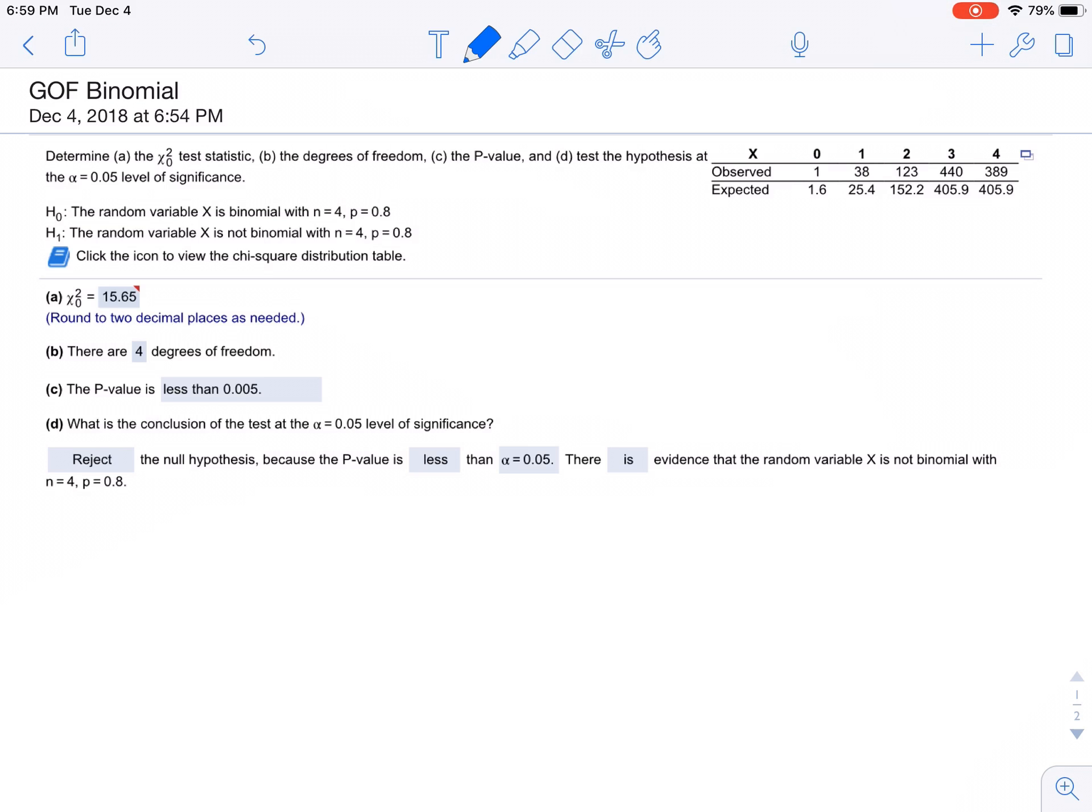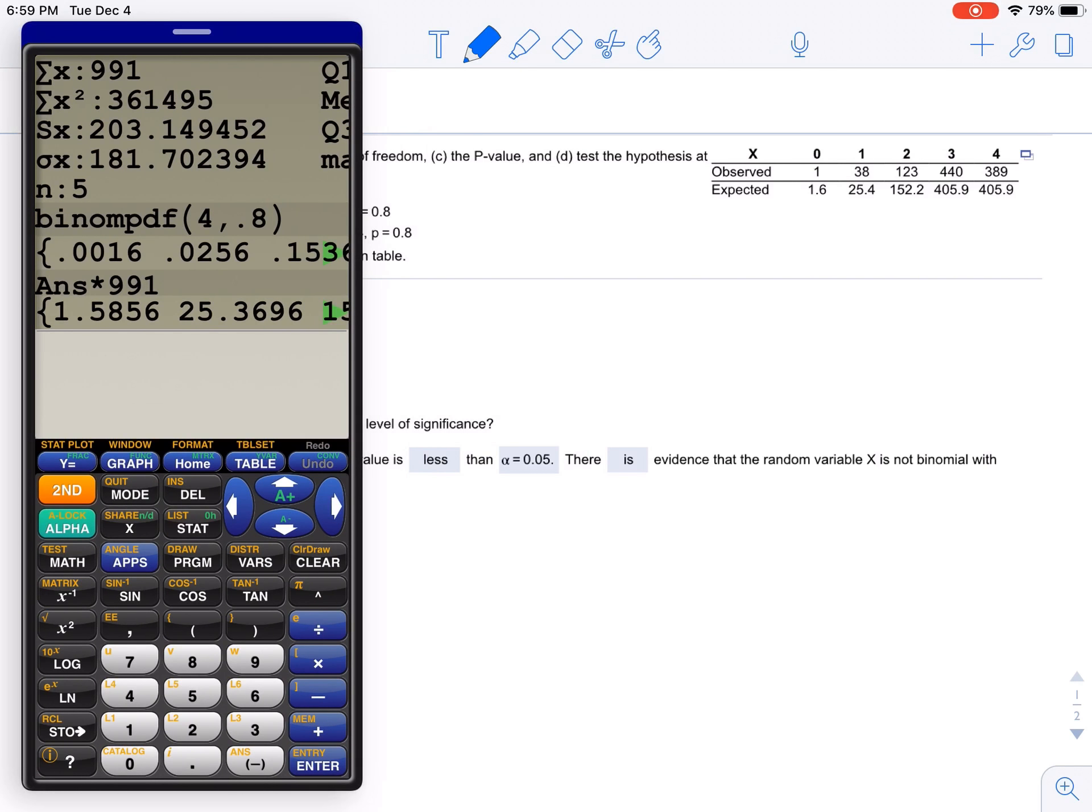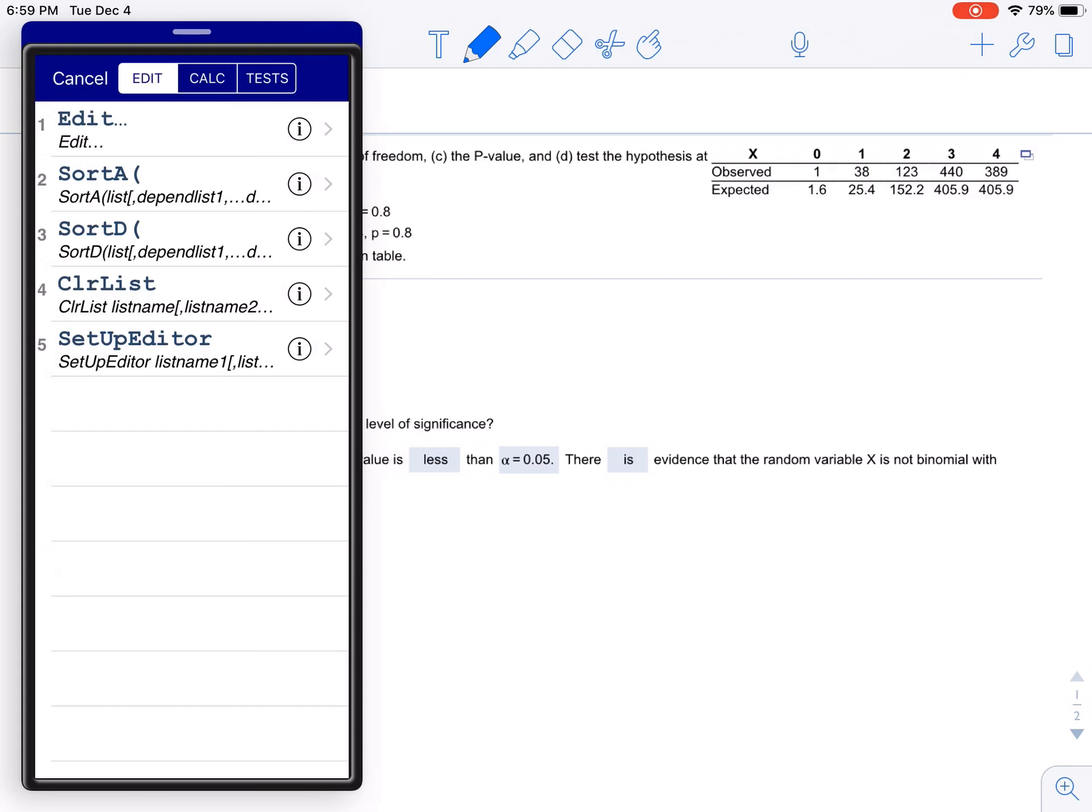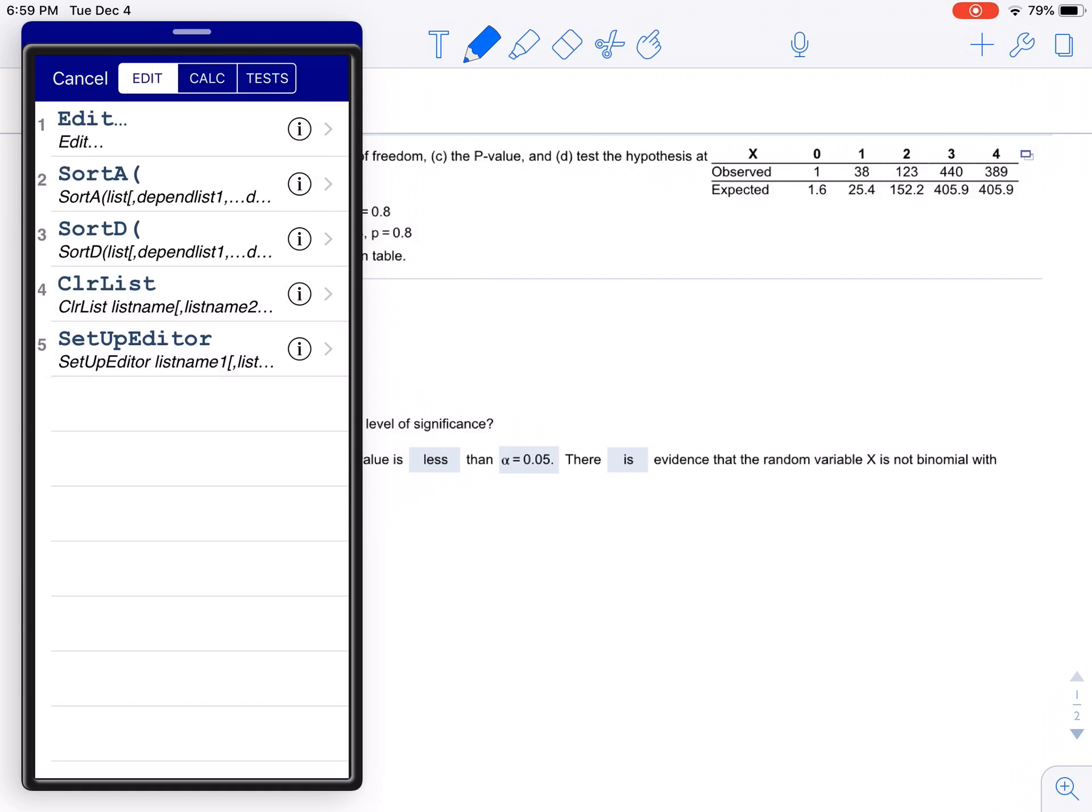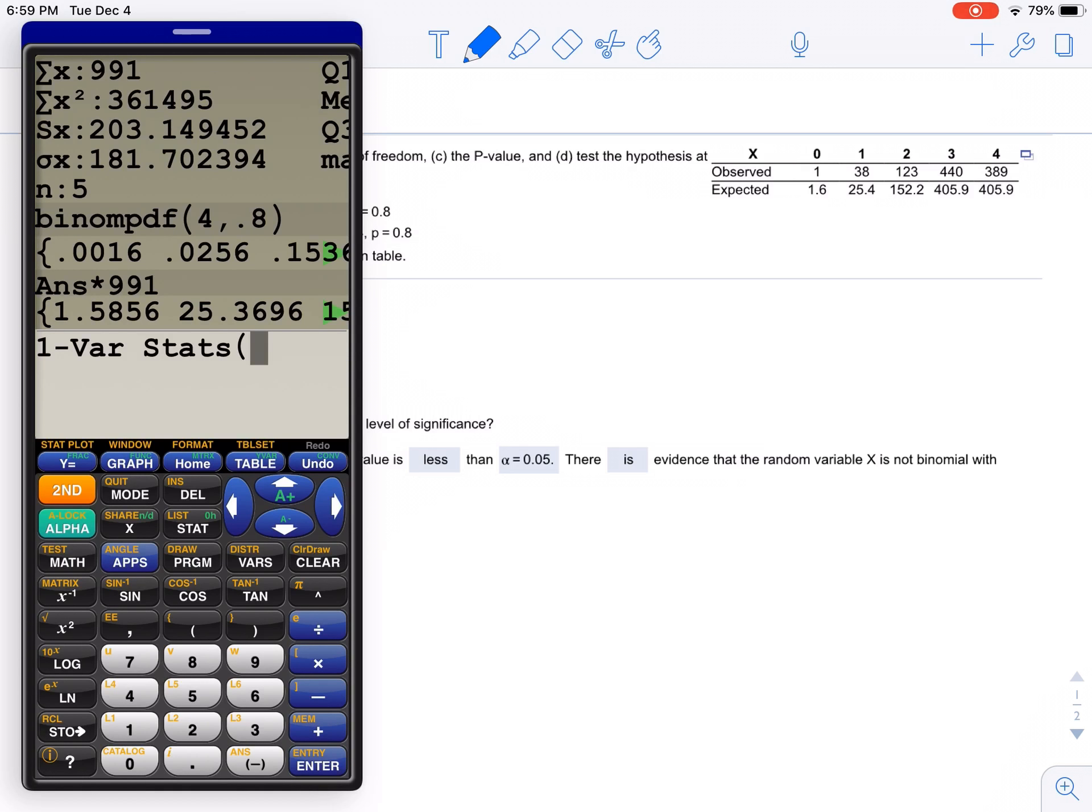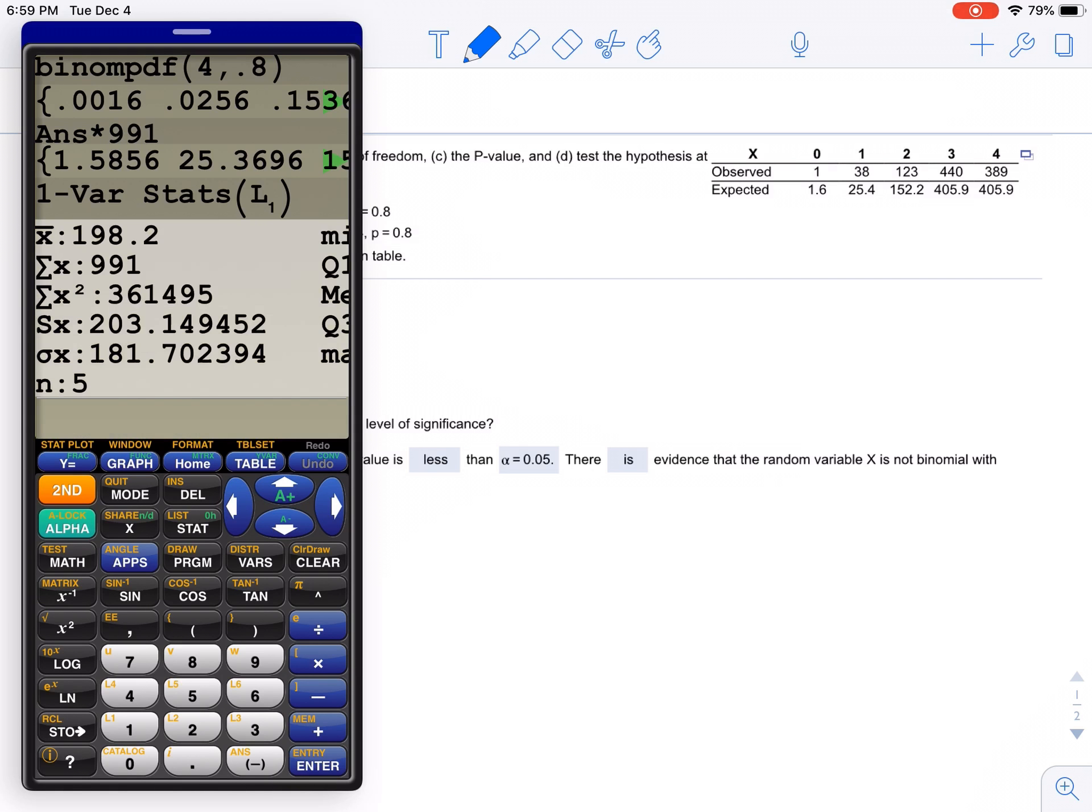They give us the expected values, but it would be good to know how to get those. So the way you get those is, just for your own understanding, if you go to edit and you put the values 138, all the observed values, and then you go to stat, calc, one bar stats on L1, we find that the sum of those values is 991. So there's 991 observations that we found.